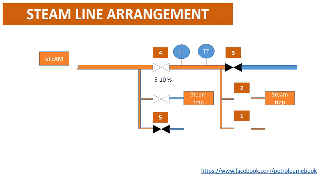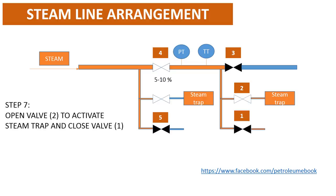Step 7: Open valve 2 to activate steam trap and close valve 1. During this time, please confirm that condensate is not dirty and contains no impurities inside.